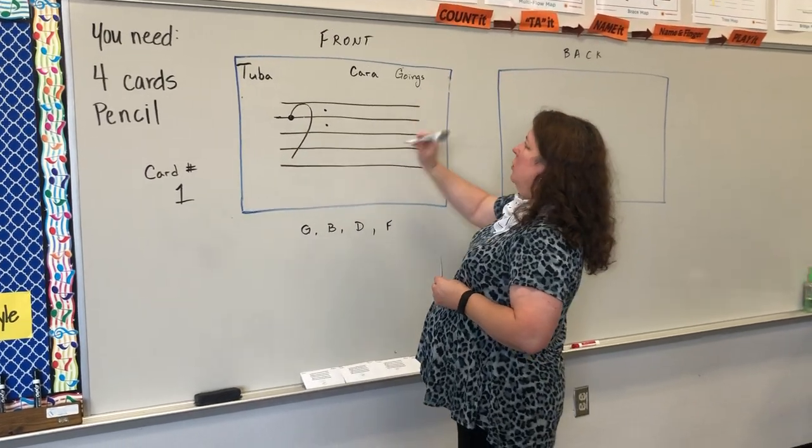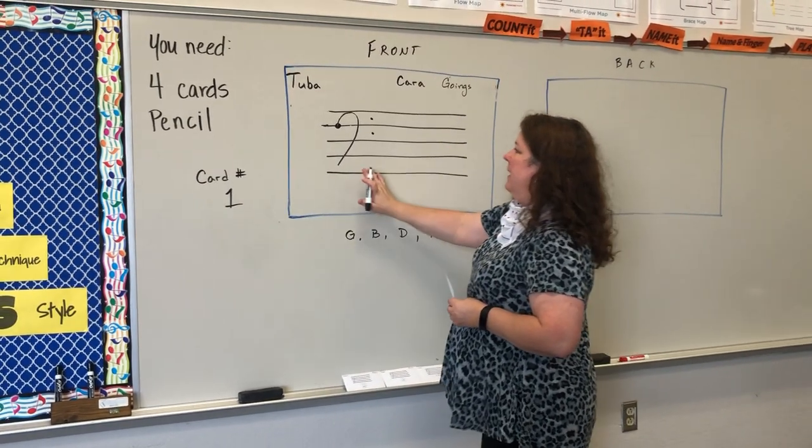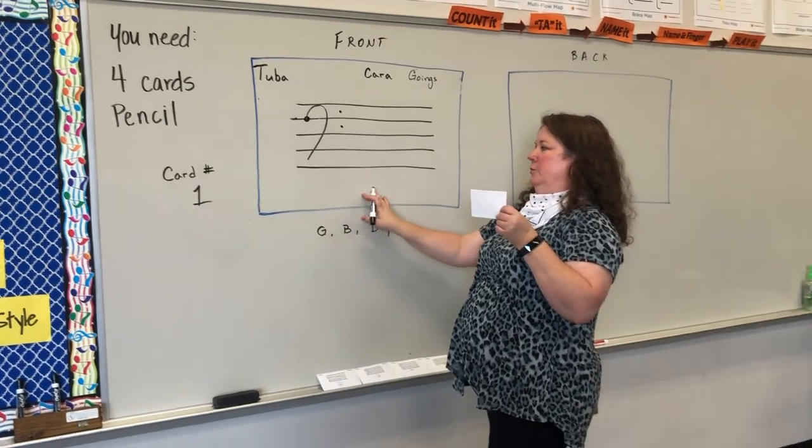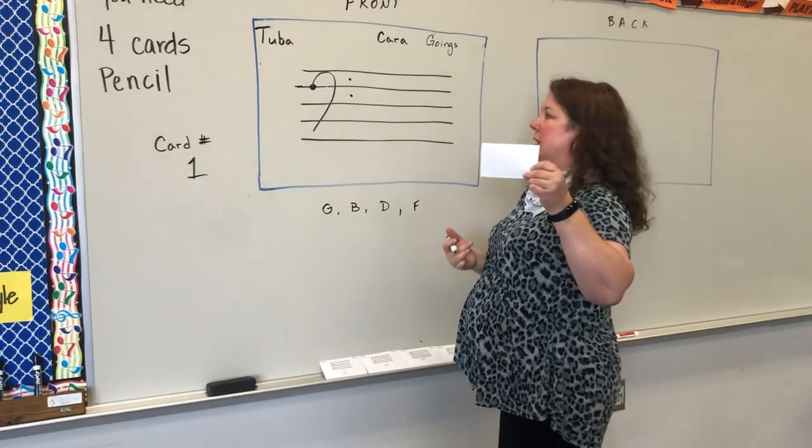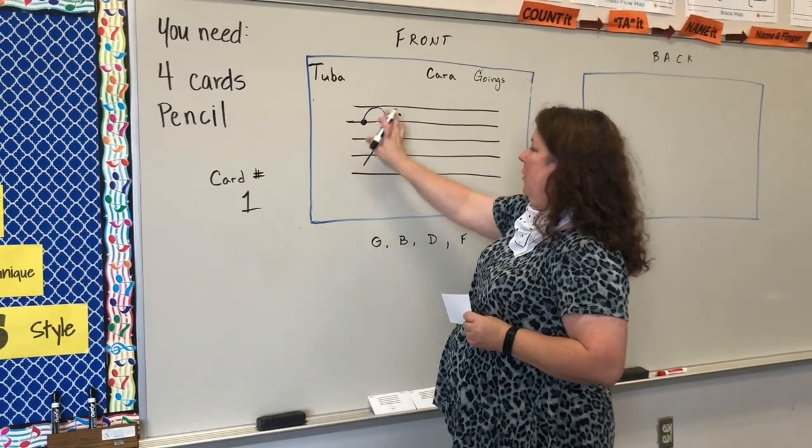You're going to put tuba up in the left-hand corner, and then in the right-hand corner, you're going to put your first and your last name. You're going to draw the five lines of the staff. Make sure you leave space below because you're a tuba. You need that. Use the blue lines on your index card to help you. Then you're going to draw your bass clef on that.